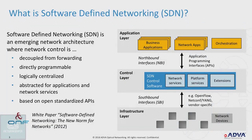What is software-defined networking? This is a general emerging network architecture where the network control is decoupled from forwarding, directly programmable, logically centralized, and abstracted for applications and network services, based on open and standardized APIs. This definition is from the Open Networking Foundation, the group that took on its banner to standardize activities around SDN.